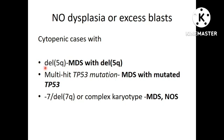The exceptions are deletion 5q, monosomy 7, deletion 7q, complex karyotype, and TP53 mutation. So in cytopenic patients, even if there is no dysplasia or excess blasts, the presence of these genetic abnormalities will categorize patients into MDS with deletion 5q, MDS with mutated TP53, or MDS-NOS respectively.